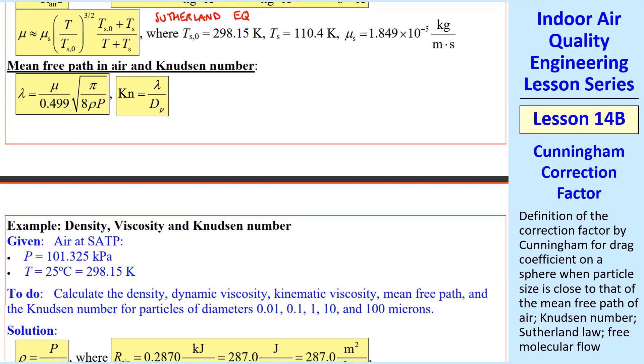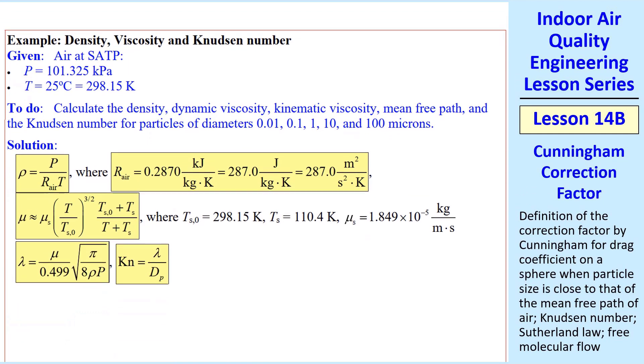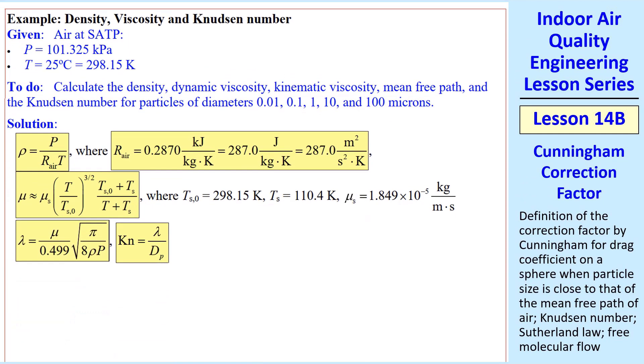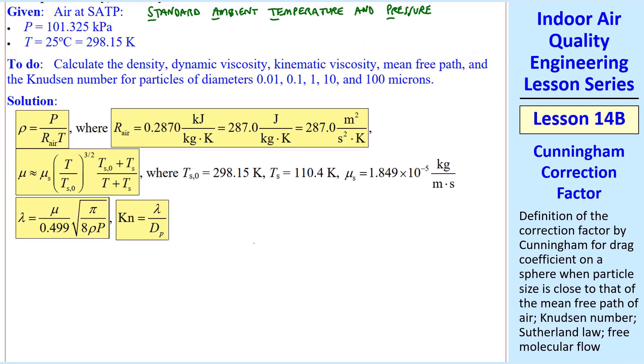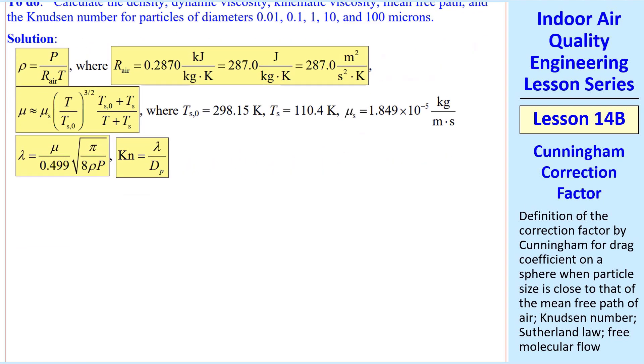I'll do a quick example where we calculate the density, viscosity, and Knudsen number for air at SATP, which means standard ambient temperature and pressure. The pressure is standard atmospheric pressure and the temperature is 25 degrees C. In all these equations we must use K, not C. Always use absolute temperature. In this problem we want to calculate the density, dynamic viscosity, kinematic viscosity, mean free path, and Knudsen number for particles of various diameters.